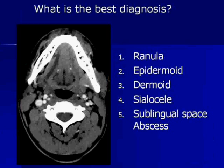What is the best diagnosis? Is it: one, ranula; two, epidermoid; three, dermoid; four, silocele; or five, sublingual space abscess? We're going to start the clock — you can use your audience response system, you have 10 seconds.